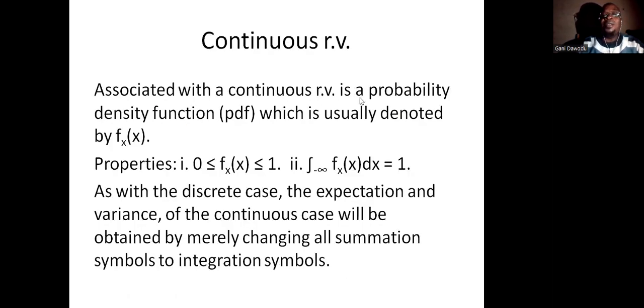Now continuous random variables. As you have with discrete random variables, a continuous random variable has a probability density function, as opposed to the probability mass function that we had in the discrete case. And the properties are also very similar. The f(x) is trapped between zero and one, and its integral is equal to one. There isn't much difference except that you are going to change the summation symbol to integral symbol. That's all. And then the formula for the expectation and the variance remains intact.